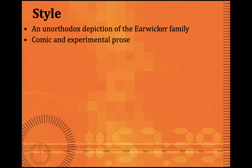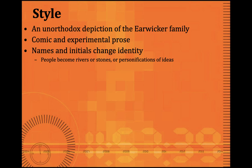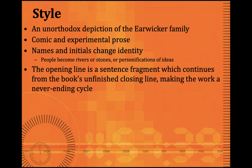The style of Finnegans Wake is an unorthodox depiction of the Earwicker family, written in comic and experimental prose. Names and initials change identity; people become rivers or stones; ideas are personified and people become personifications of ideas. The opening line is a sentence fragment. Imagine a sentence cut in half: the second part becomes the first line of the novel, and the first part becomes the last line — making the work a never-ending cycle. The opening line is: 'riverrun, past Eve and Adam's, from swerve of shore to bend of bay, brings us by a commodious vicus of recirculation back to Howth Castle and Environs.' The closing line is: 'the keys to. Given! A way a last a long the' — and 'the' is the last word of Finnegans Wake.